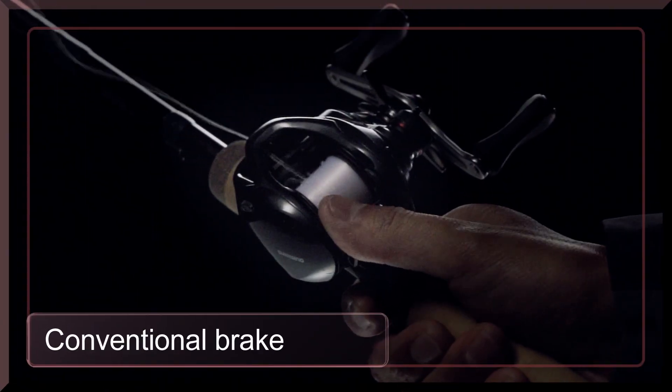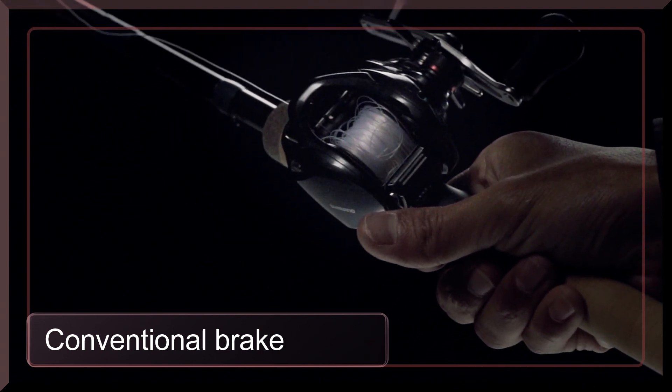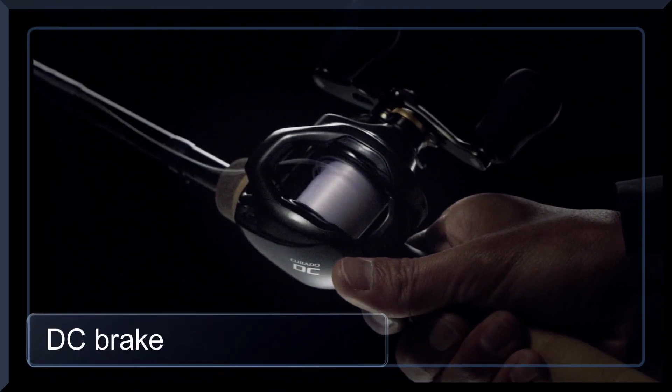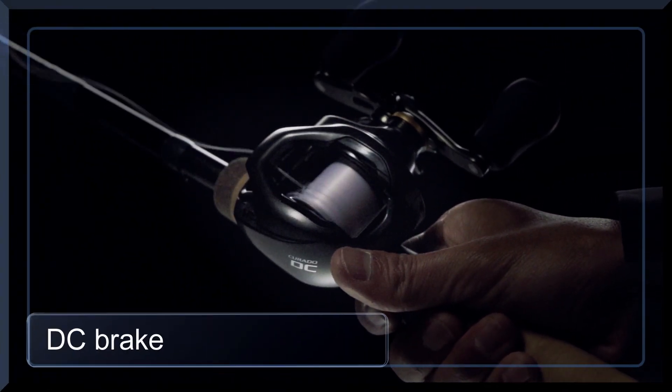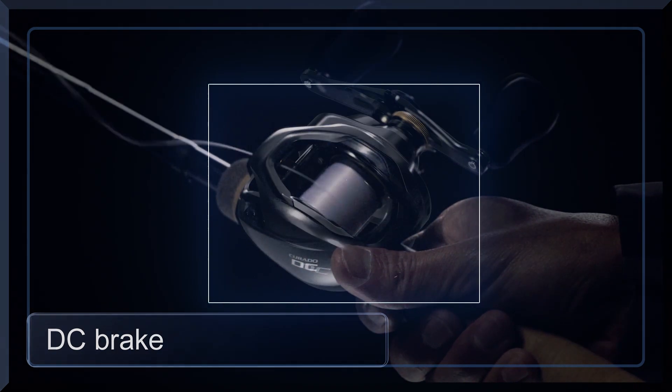Conventional braking systems require a substantial amount of thumbing to prevent backlash. But DC Brake eliminates trouble and reduces thumbing. DC Brake provides ultra-long distance for anglers with less thumbing and trouble.